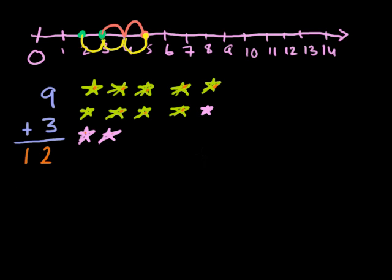So you'd say that 9 plus 3 is equal to 12. If you looked at the number line, you're starting at 9. Maybe you have 9 stars. And you add 1 star, 2 stars, 3 stars to that, and you end up with 12 stars, which is the exact answer we got before.